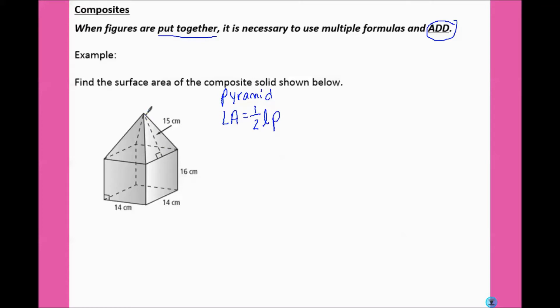It told us that the L, our slant height, is 15, but we need to know the perimeter of the base. Since the top of the box would be the same as the bottom of the box, we know this is 14, 14, 14, and 14. So P would equal 14 times 4, which is 56. So our lateral area is one-half of 15 times 56, which gives us 420.